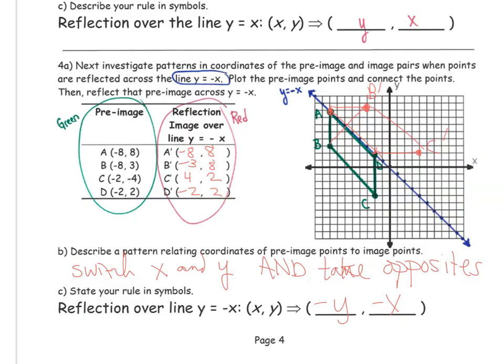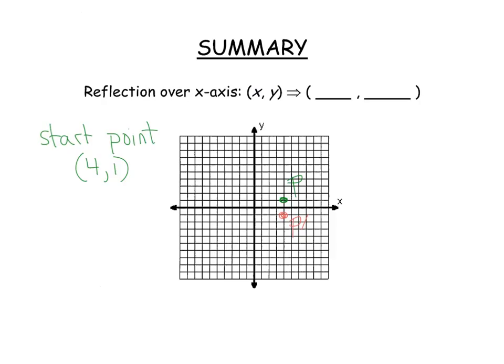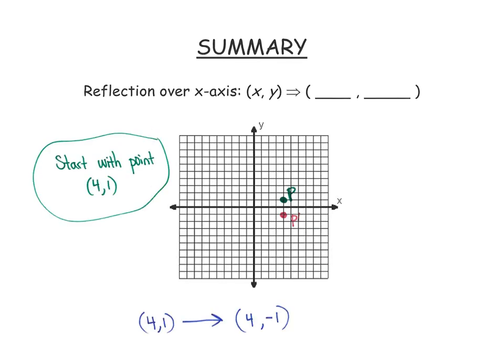Let's just summarize the next few slides. We look at where p prime is going, and it's just flipped over the x-axis. We look at a rule for that, and the x stays the same, but we're taking the opposite of y.